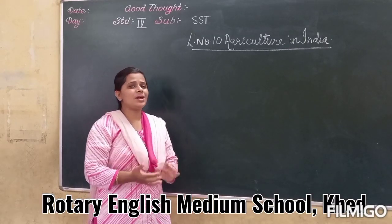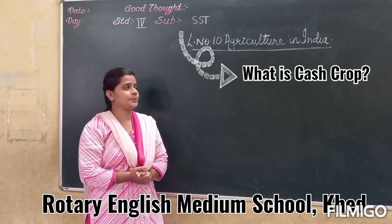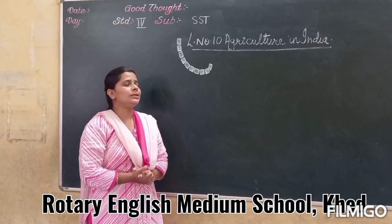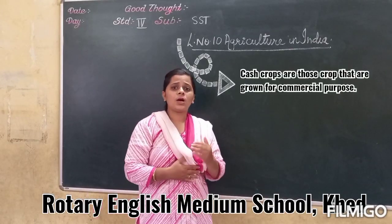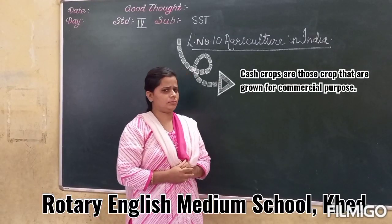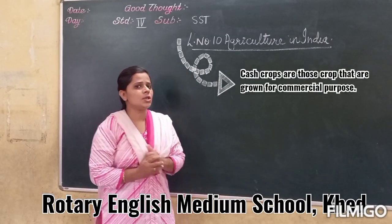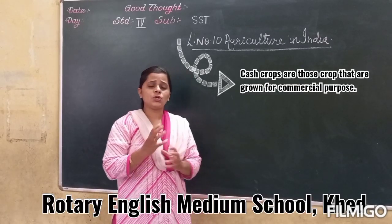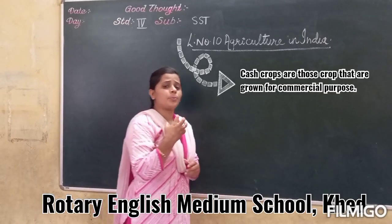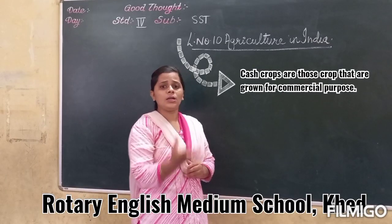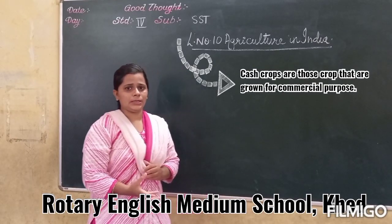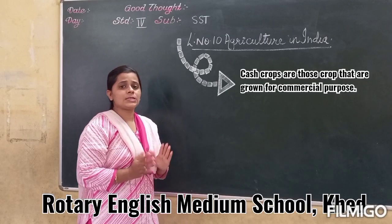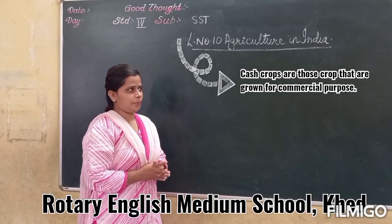Now, what is cash crop? Cash crops are those crops that are grown for commercial purpose — meaning the crop which is used to make a profit, to earn money. So that crop is known as commercial crop.